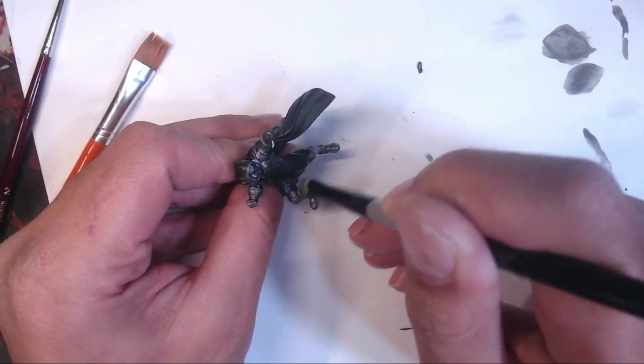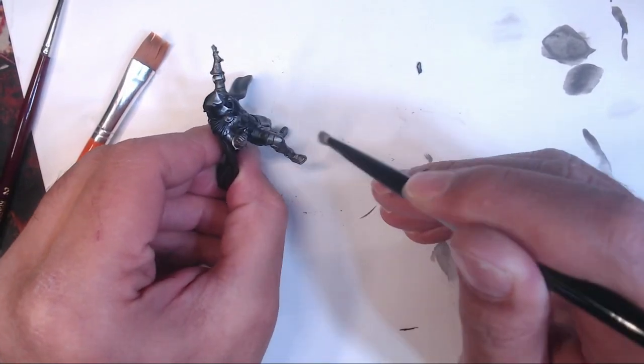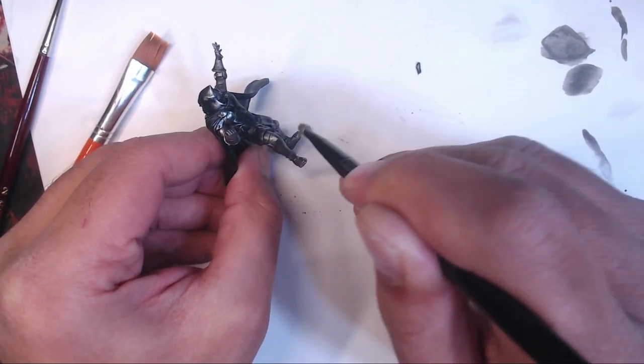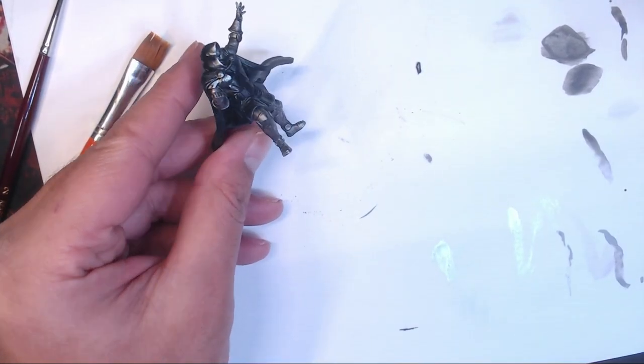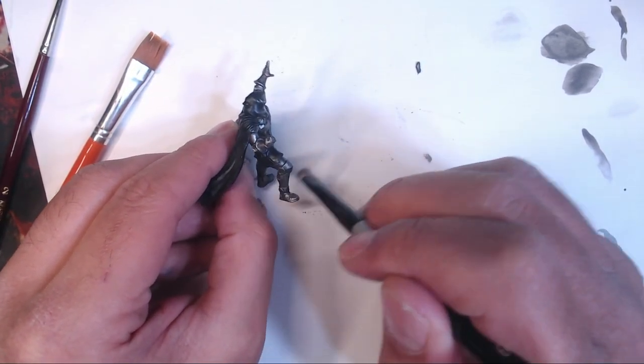Next, using a stiff brush, I dry brush some of that shiny silver back on, focusing on the high points, flat areas, and surfaces that face upward. Be sure to get his face as well, to give it a bit more definition.